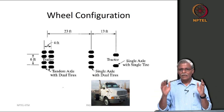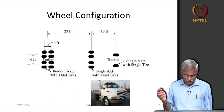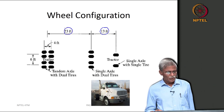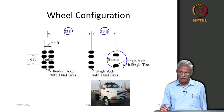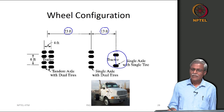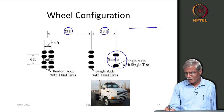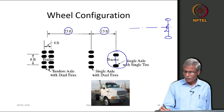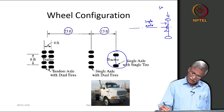This is the terminology we will use throughout this course. A single axle with a single tire means one axle with one tire on either side. When talking about a truck, you are talking about the centerline — one tire on each side. This is what we call a single axle and single tire configuration.